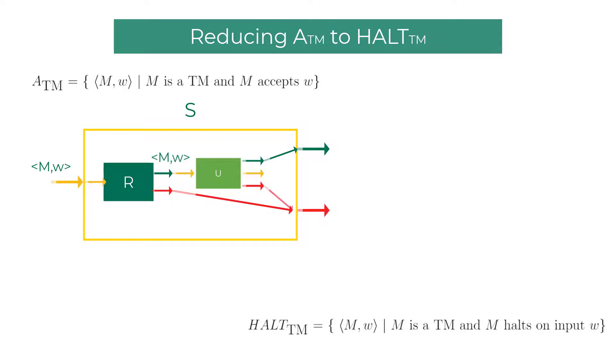So there you go. I have connected the universal Turing machine that is simulating M on W. The connections for accept and reject state are going to the accept and reject state of the decider S.